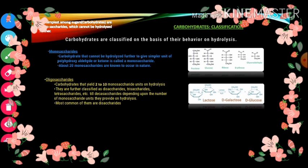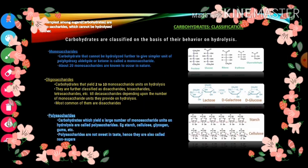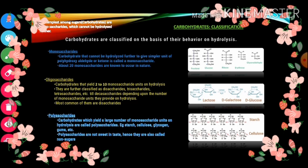The next category is polysaccharides. As the name suggests, 'poly' means several. Carbohydrates which yield a large number of monosaccharide units on hydrolysis are called polysaccharides. Very good examples are starch and cellulose.